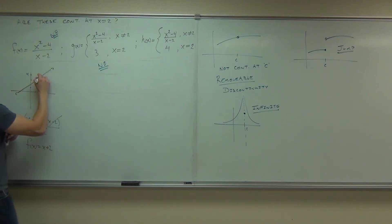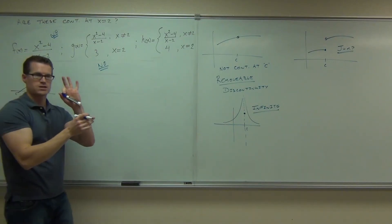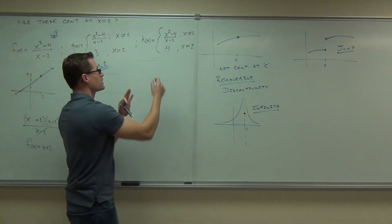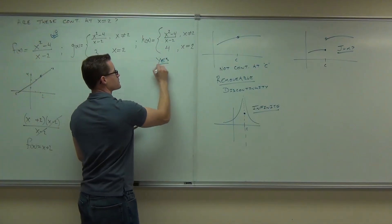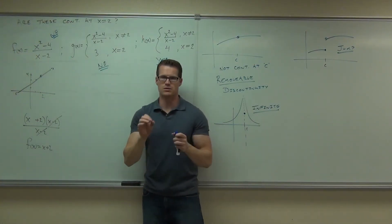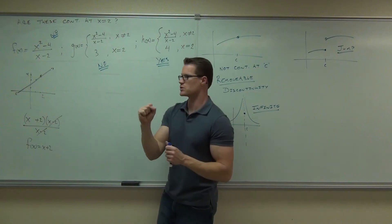Is the function defined at that point? Yes, it is. Does the limit exist at that point? Yes, it does. Is the function equal to the limit? That means all three qualifications for having continuity at that point. Therefore, we say yes. That's a removable discontinuity. It means you identify one point that fills in the hole.